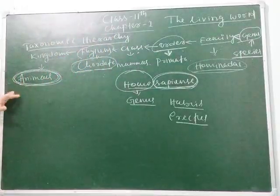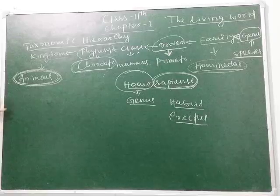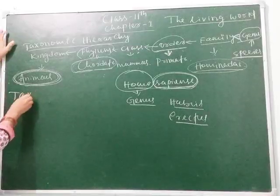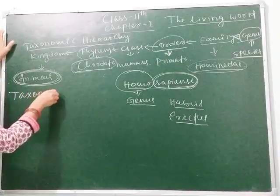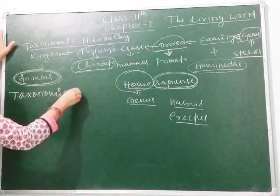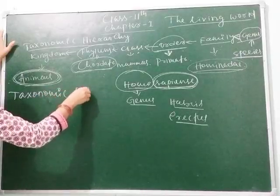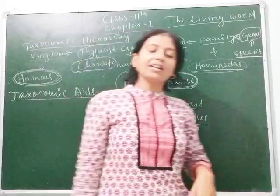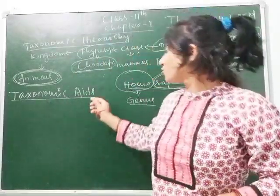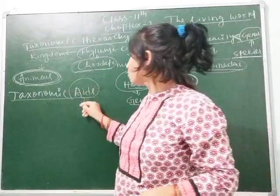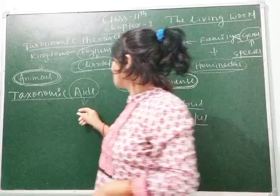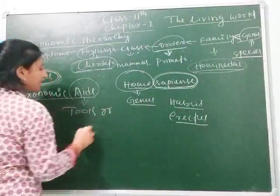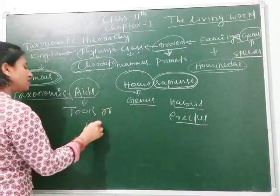The next topic is taxonomic aids. Taxonomic aids are the tools or instruments that help us know about different taxonomic categories.